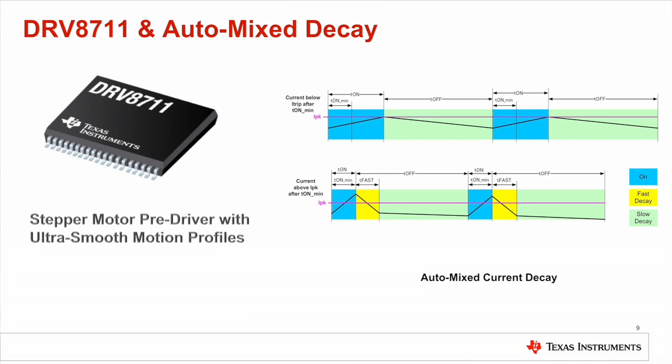To get a general idea on this: current is sampled at the end of the minimum fast-on time. If it's lower than the desired peak current, it continues to grow until hitting the targeted current level, and then slow decay takes place. If the current is sampled higher than the desired level, fast decay kicks in immediately, and after a certain amount of time, slow decay takes over. This approach selects the optimum decay mode for every current level, allowing designers to tune any motor for the best result.